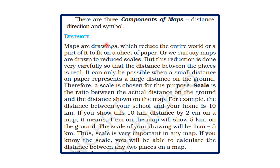Now we will see what the components of maps are — what components are required to draw maps. The first is distance, the second is direction, and the third is symbol. One by one we will see what the uses of these are on a map and how they help us in reading a map.